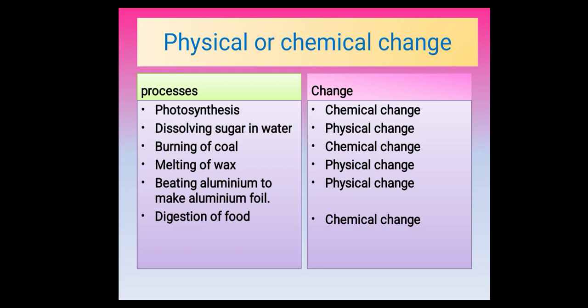So students, now we are done with this chapter. We have learned about physical change, chemical change, how rusting of iron takes place, how to prevent rusting, what is crystallization, how the crystallization process is carried out, and we have done some questions as well. I hope you are very much clear with this chapter and your concepts are clear. Thank you so much for watching.